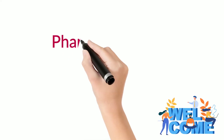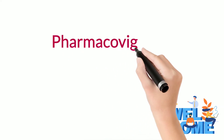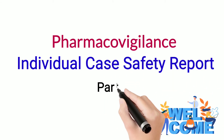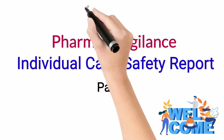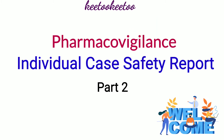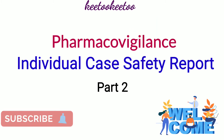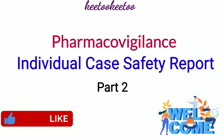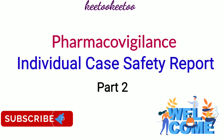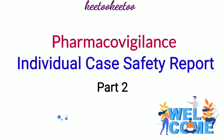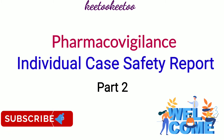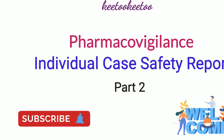Welcome back to the pharmacovigilance series. This is the second part of individual case safety report. In the previous video, we have seen what are the different sources of report, how surveillance takes place in the post-marketing phase and many other things. In this video, we will see what is validity criteria, what is meant by initial and follow-up cases, and what are the different safety report forms. Let's get started.